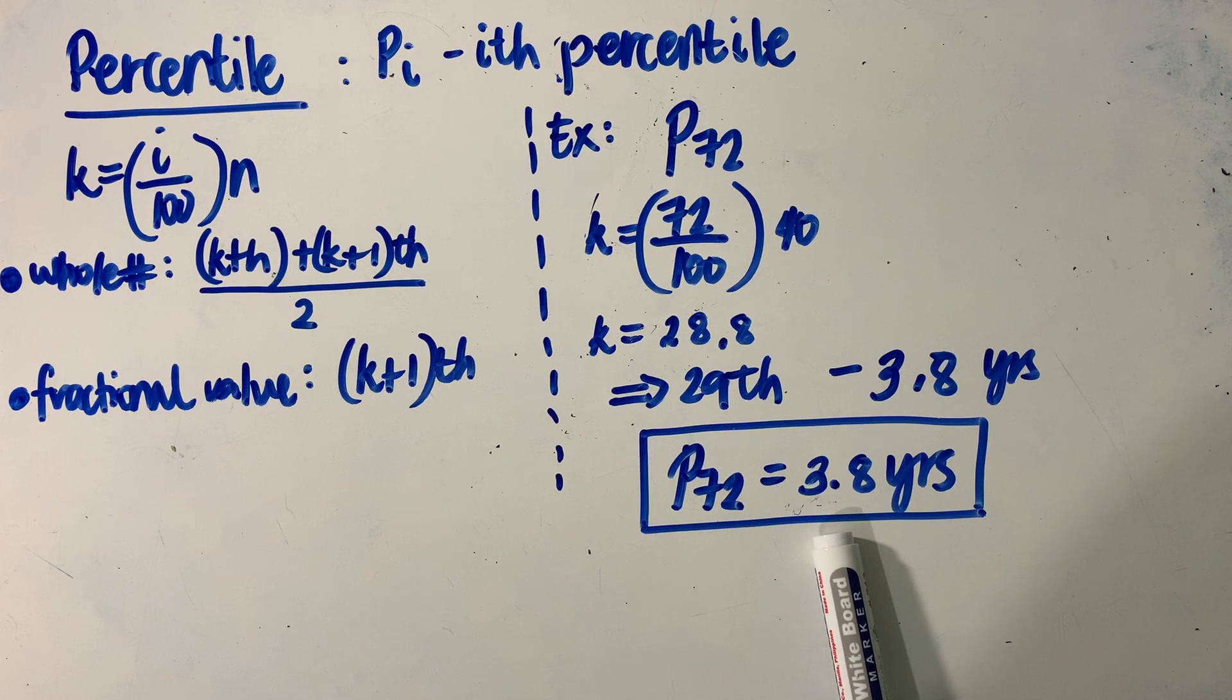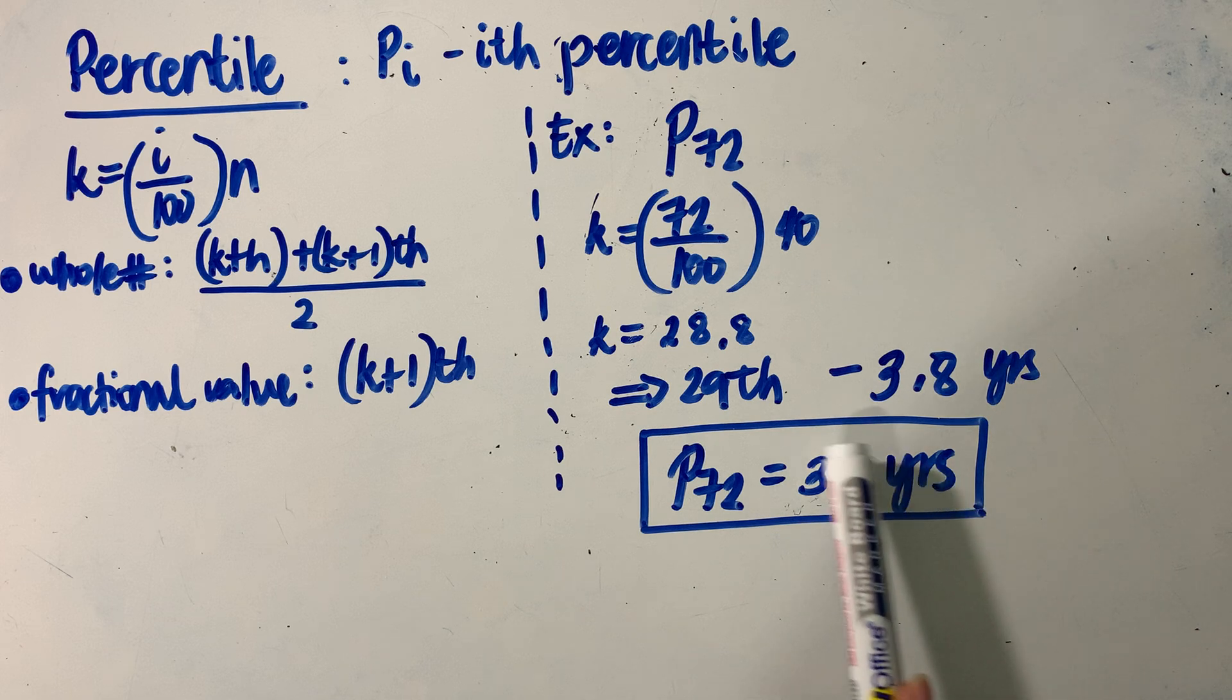If 72% fall below 3.8 years, how many percent would fall above it? That would be equivalent to 28%. So another way of looking at this value,